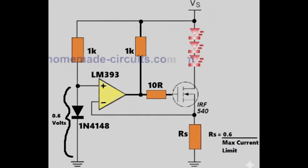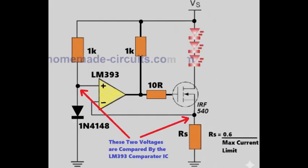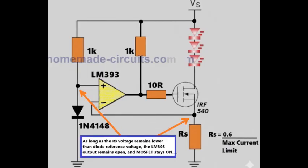So now the comparator is continuously comparing these two voltages. As long as the voltage across the sense resistor is less than the diode reference voltage, the comparator output remains in a state that allows the metal oxide semiconductor field effect transistor to stay switched on. Because of this, current flows normally through the load.